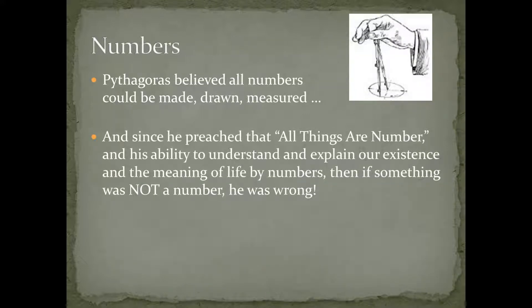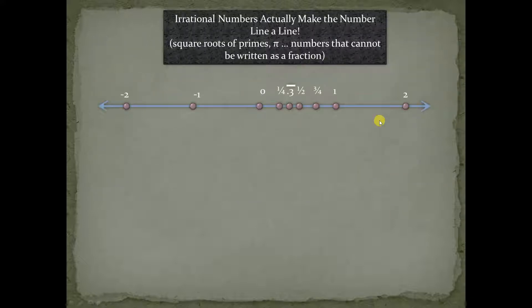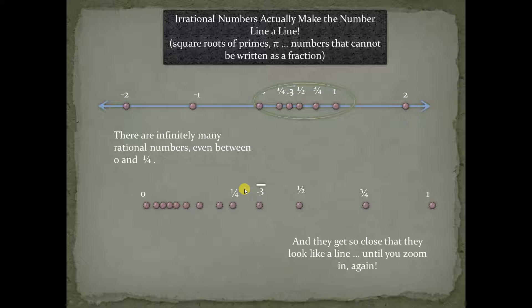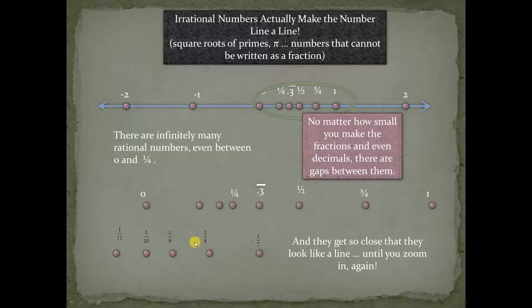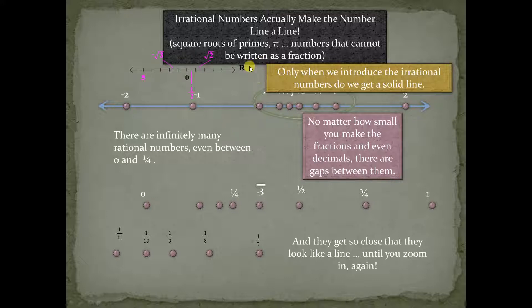Pythagoras had trouble with the irrational numbers. So, the irrational numbers actually take our set of numbers and makes it a true line. It fills in all the gaps. You see, there's infinitely many numbers in between 0 and 1. There's infinitely many rational numbers between 0 and 1. In fact, even between 0 and 1 quarter, there are infinitely many rational numbers. We could just keep zooming in over and over and over again. What actually fills the gaps and makes this a solid line are the irrational numbers. And again, irrational numbers are square roots of prime numbers and transcendental numbers like pi.